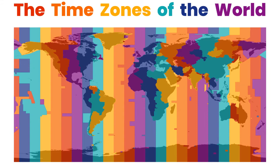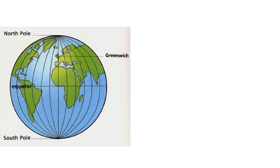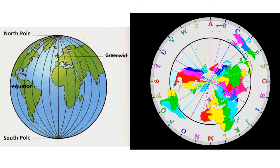The term time zone refers to the local time of a region or a country where the same standard time is used. All time zones are determined by the lines of longitude that connect the North and the South Pole and divide the globe into 24 different time zones.